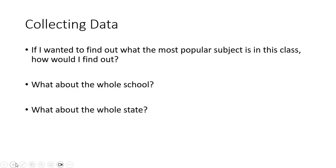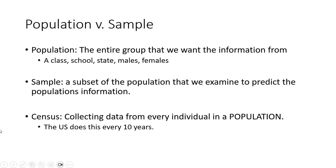The first thing we're going to do is talk about collecting your data. The number one thing you want to do is identify what is the population — what group you want to be gathering data from and what you want to conclude from that. Do you want to look at a certain class, a whole school, or a whole state? If you want to talk about all high schoolers in your city, you'd have to take samples from multiple different high schools, and if you want to expand that to the state or country, you have to expand it out even larger.